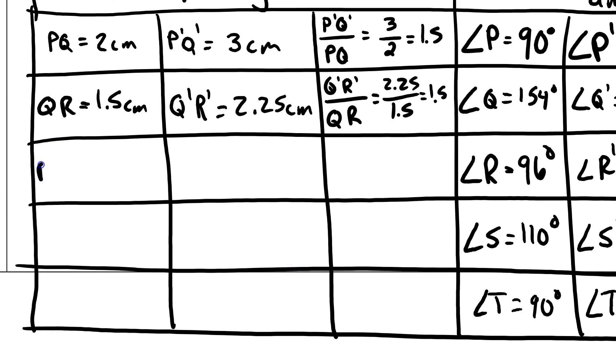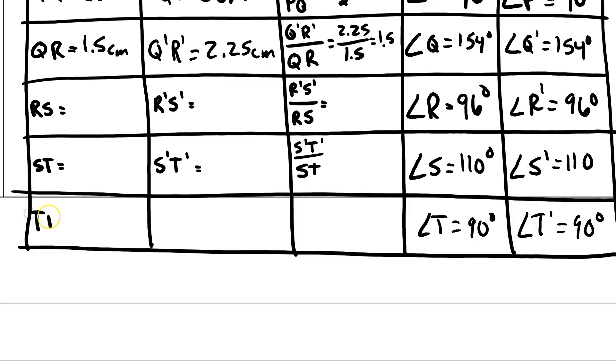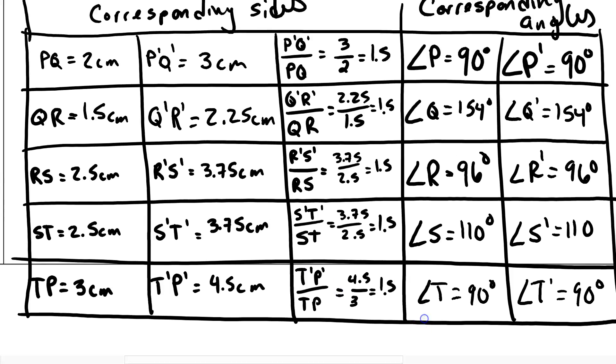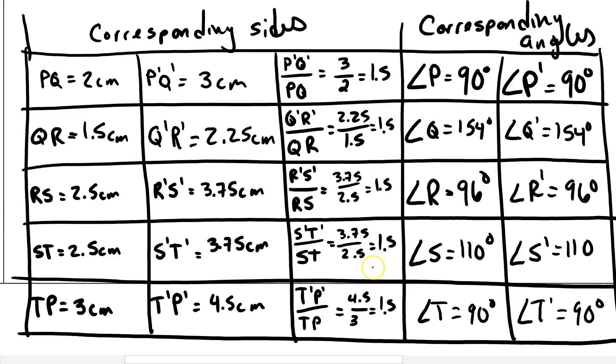Now, what I want you to do is I want you to do this for RS and R prime S prime, R prime S prime over RS. And I want you to do this for ST and S prime T prime, S prime T prime over ST. And then finally, TP and T prime P prime, T prime P prime over TP. Now, when you finish all the work, we're noticing that all the scale factors are the same. If you divide the primes by the original, you all get a scale factor of 1.5.